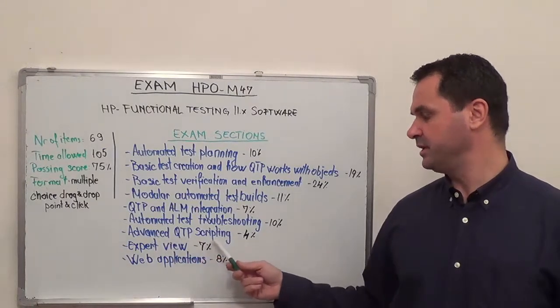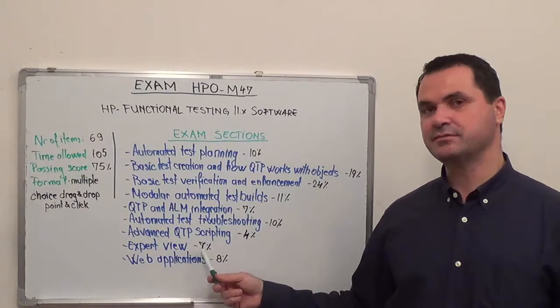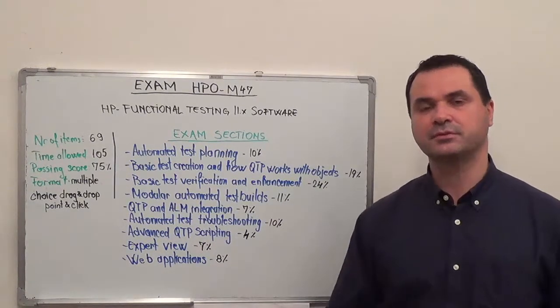Advanced QTP scripting, 4%. Expert view with 7%. And finally web applications with 8% from the total of the questions.